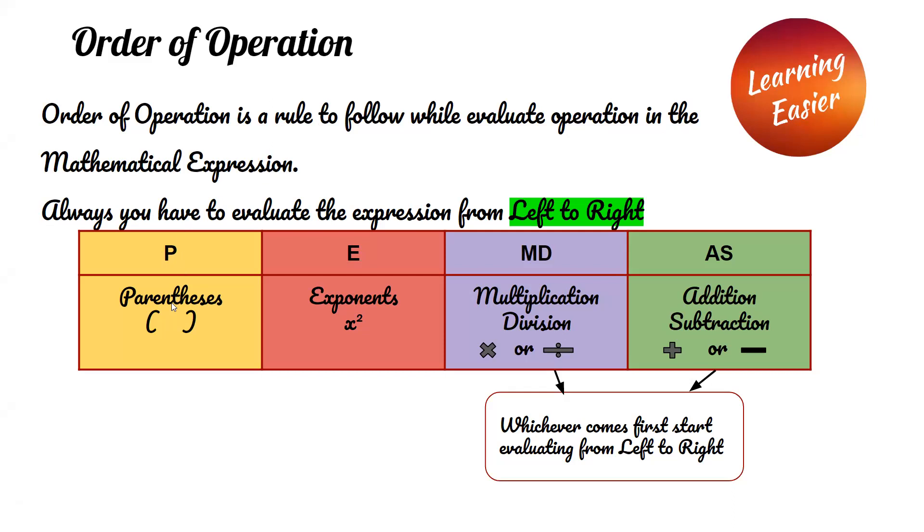In PEMDAS, the P stands for parenthesis, E stands for exponents, M and D stand for multiplication and division. If you have a problem with both multiplication and division, you have to do it from left to right.